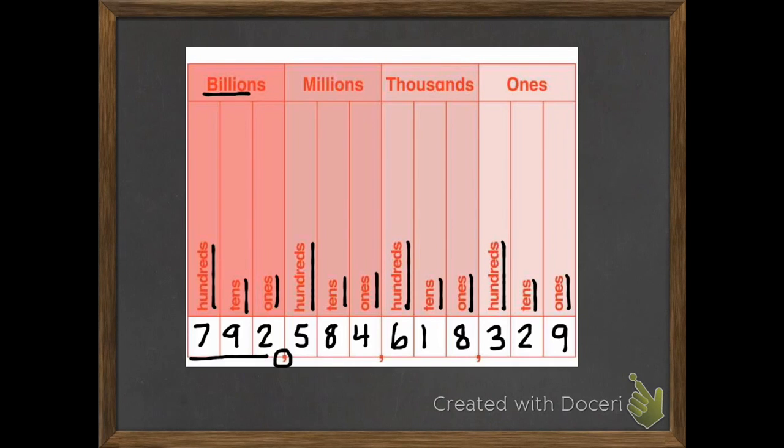That comma is the billions. So, 792 billion, and then we just say the next three digits, 584. And that comma is the end of the millions period. So, 792,584,618. This is the thousands.